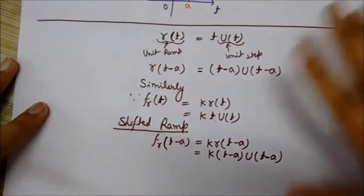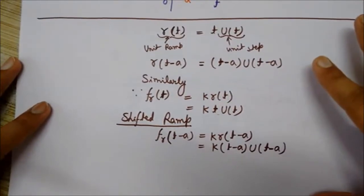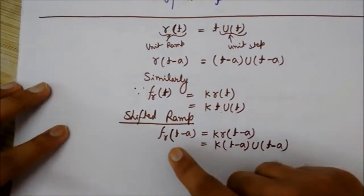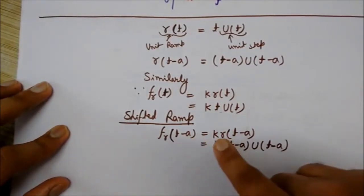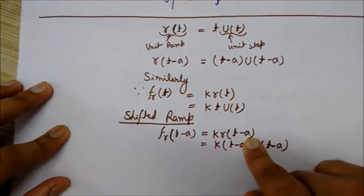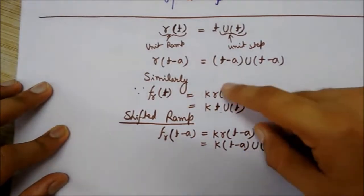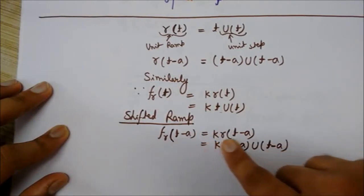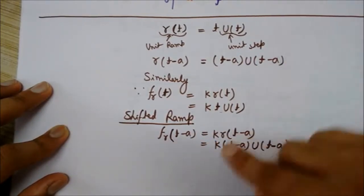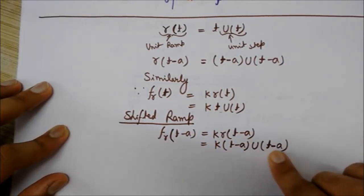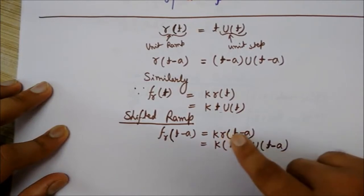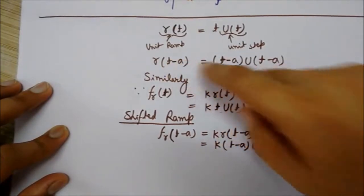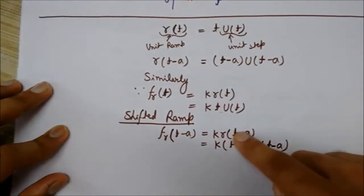Now see some examples, some results for the shifted ramp. For the shifted ramp, fr(t-a) is equal to k*r(t-a). From this you can see k, replace this t by t-a, is equal to k*r(t-a), so k*(t-a)*u(t-a). Since r(t-a) we have defined as this, so replace the value of t-a from here, okay, t-a.